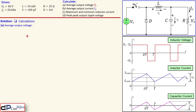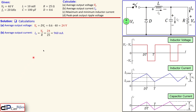Now let's move on with the calculations. We have the average output voltage or DC output voltage, which is given by the expression: output voltage equals duty cycle times the input DC voltage. In this case we get 24 volts.